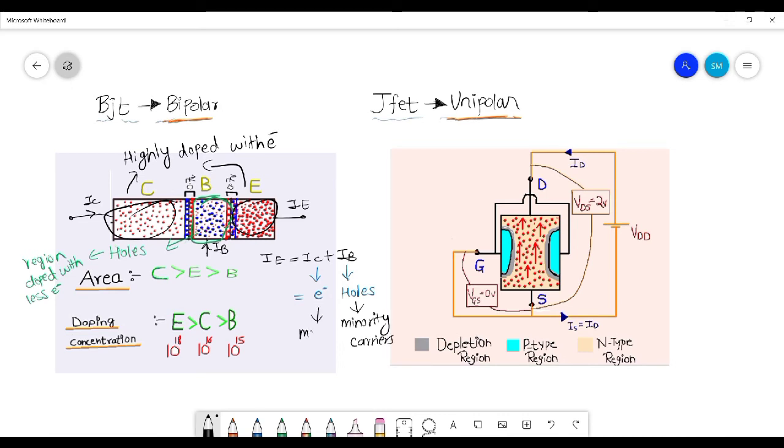The output current is the sum of both majority and minority carriers. Therefore, we term BJT as bipolar junction transistor. We call BJT bipolar due to this reason.